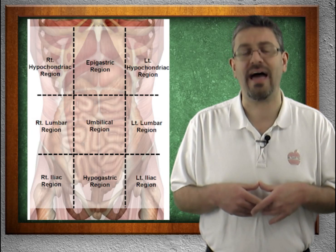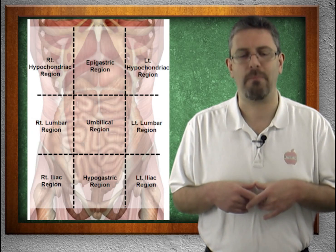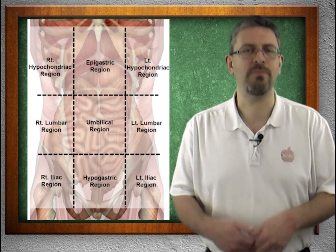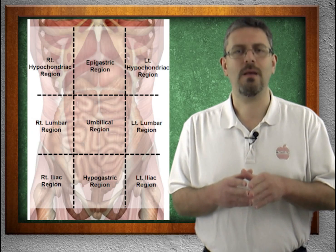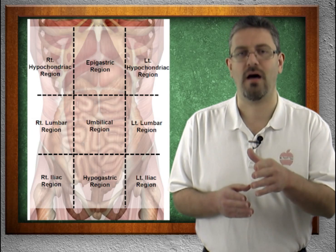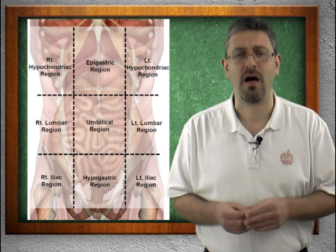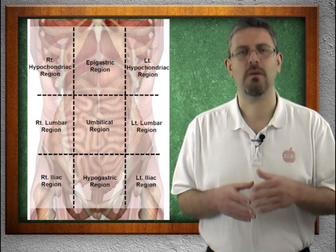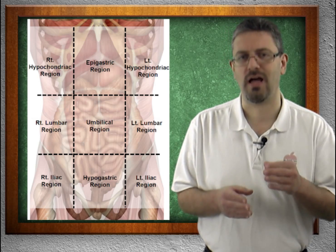Going above the umbilical region is 'epi,' and going below it is 'hypo.' Epi means above or upon; hypo means below or under.